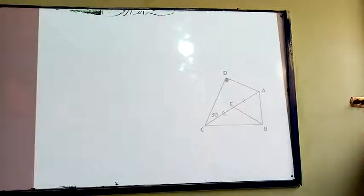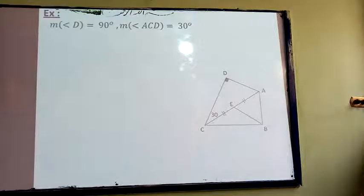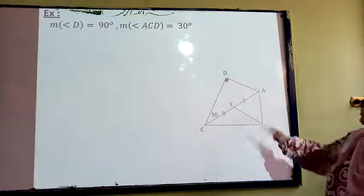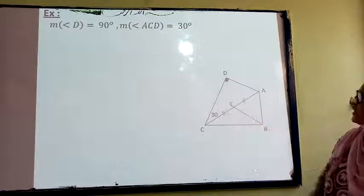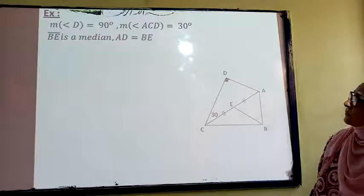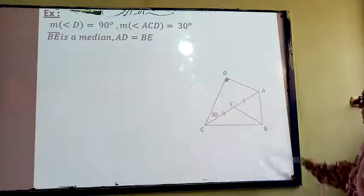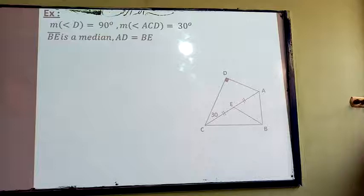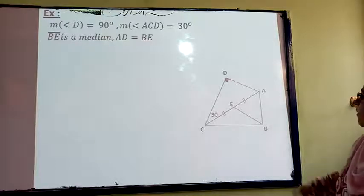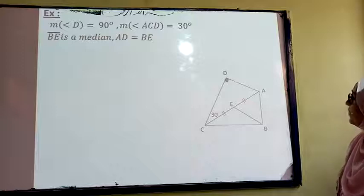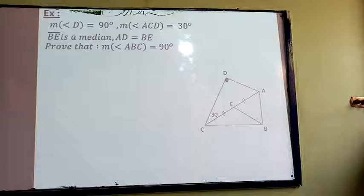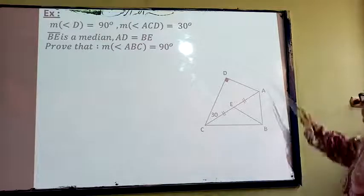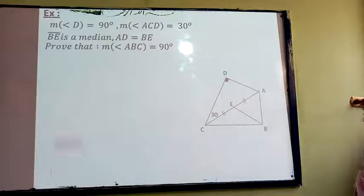Another example. Measure angle AC equals 90, measure angle AC equals 30, BE is a median and AT equals BE. Prove that measure angle ABC is 90 degrees.